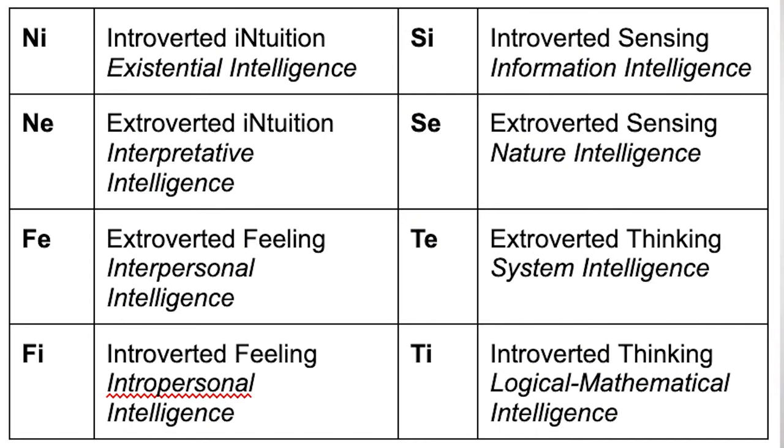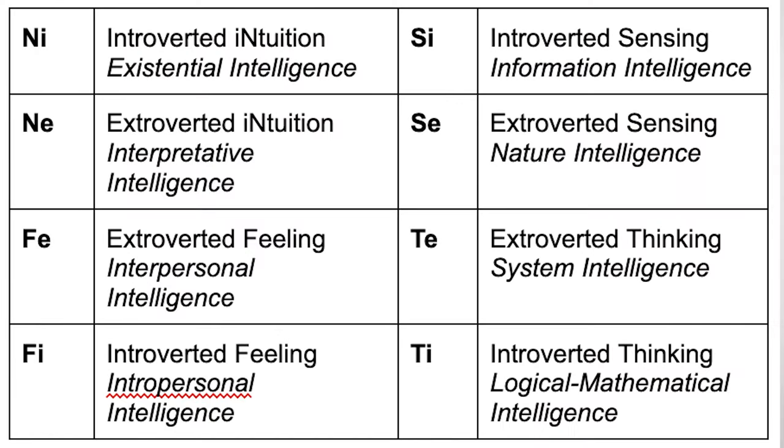FE stands for extroverted feeling, intrapersonal intelligence — so social intelligence. Introverted feeling stands for intrapersonal intelligence, so self-awareness. Introverted sensing stands for information intelligence, extroverted sensing for nature intelligence, extroverted thinking for system intelligence, and introverted thinking for logical mathematical intelligence. Those are the cognitive function abbreviations.